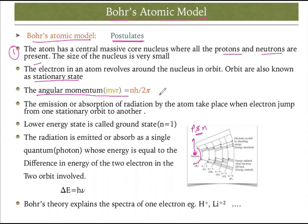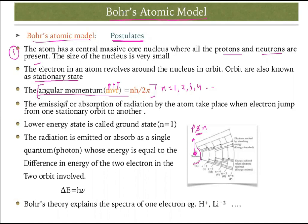The third postulate concerns angular momentum. Angular momentum equals nh/2π, where angular momentum is mvr — m is mass, v is velocity, r is the radius. n can be 1, 2, 3, 4, 5 and so on, and h is Planck's constant. Since electrons revolve around a fixed path, each electron on a shell has a particular angular momentum given by nh/2π.